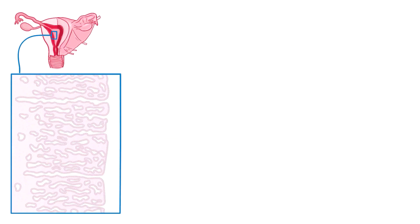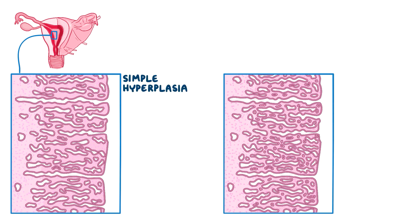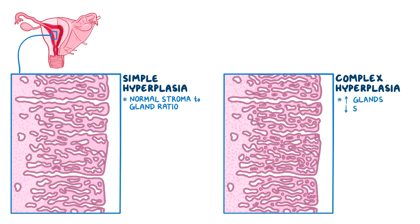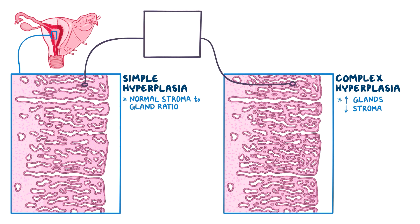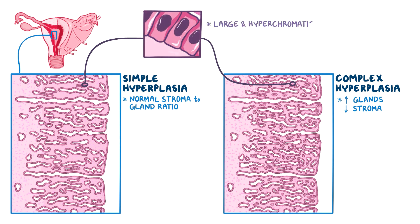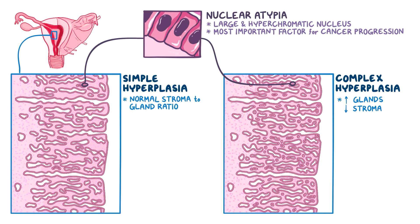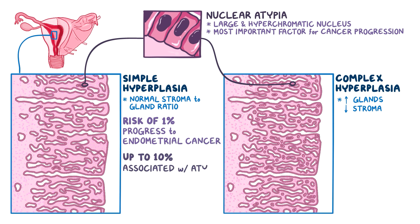Zooming into a section of the endometrium, we can see simple hyperplasia, where there's a lot of dilated glands and stroma but their ratio is similar to normal tissue. In complex hyperplasia, there are way more glands and less stroma, and this type is more at risk of progression to endometrial cancer. If we zoom in even more, we can see the nuclei inside these glandular cells. The nucleus can be either normal-looking or appear larger and hyperchromatic, meaning it's darker. These abnormal nuclear features are called nuclear atypia, which is the most important factor in terms of progression to endometrial cancer. Simple hyperplasia alone has a risk of 1% to progress to endometrial cancer, but it goes up to 10% if associated with atypia. Similarly, complex hyperplasia alone has a risk of 5%, but if associated with atypia, it increases up to 30%.